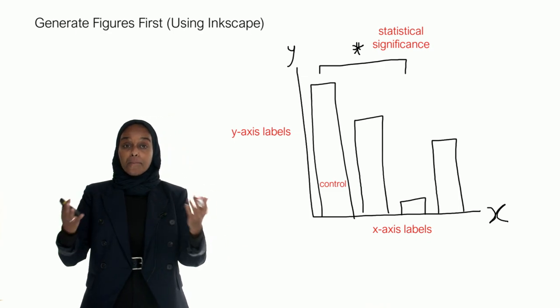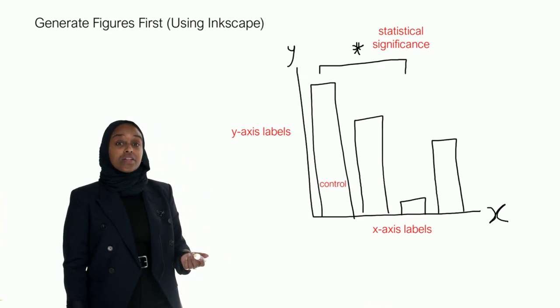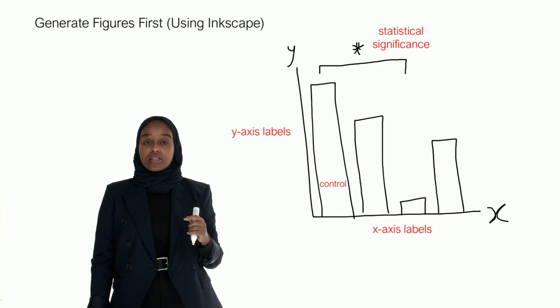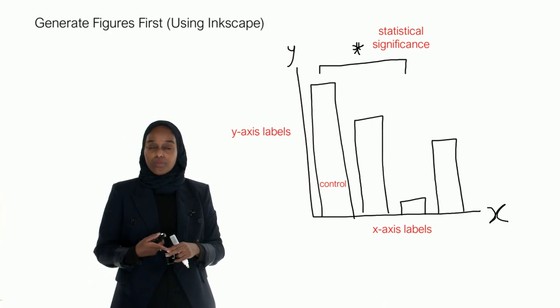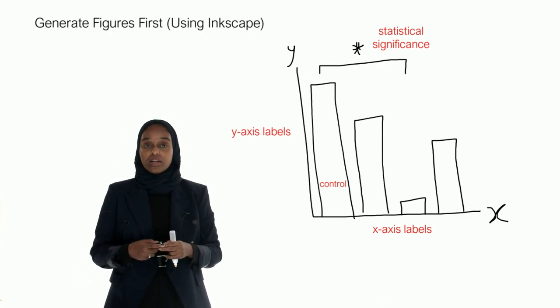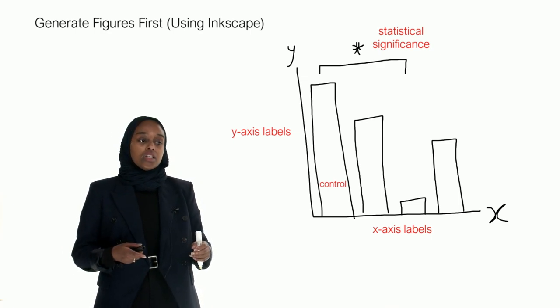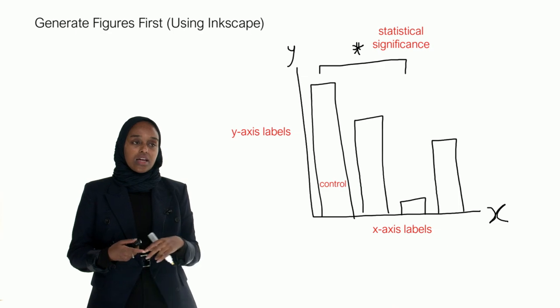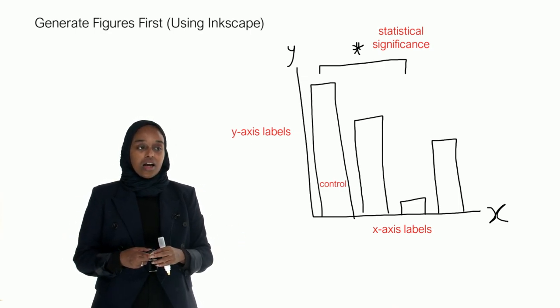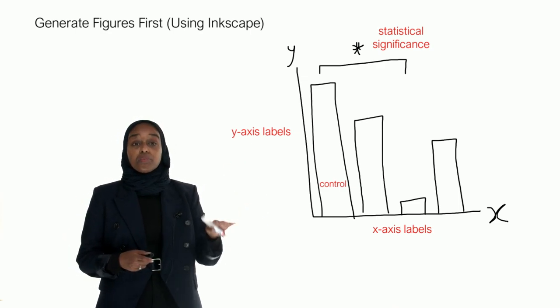Before actually writing you need to make the figures. In a previous lesson I mentioned Inkscape. And Inkscape is a really nice open platform where you can make your images look professional and look very academic. So here for example is just a graph, a bar chart where you have all the labels that you need.